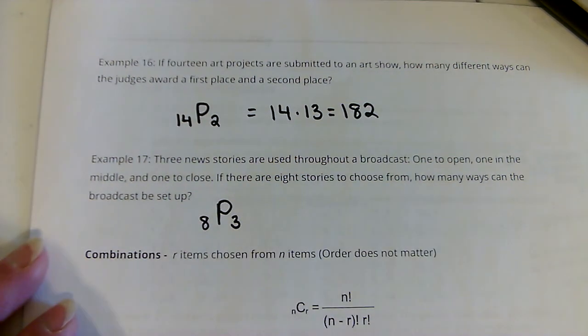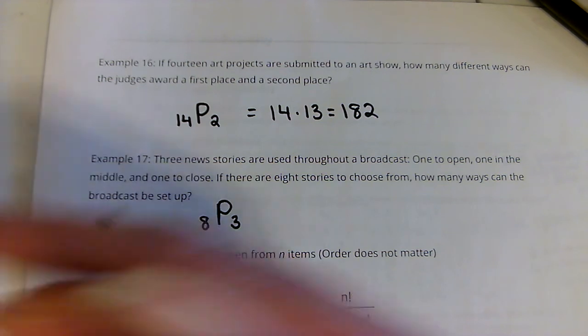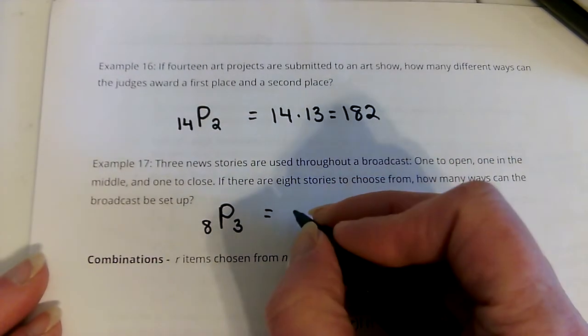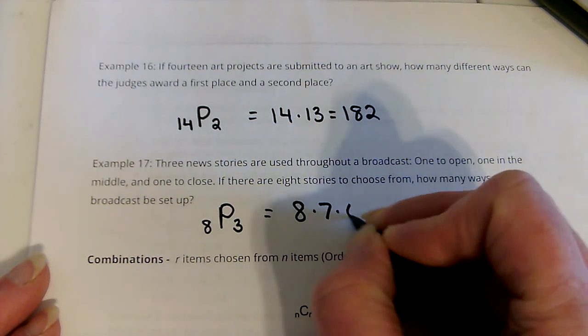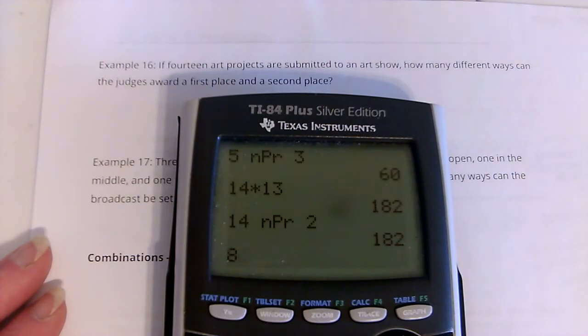Now, we can use the formula. Or these tend to not be too hard to do by hand because you'd start off with 8 to choose from, then 7, then 6. But I'll do it with the calculator too.